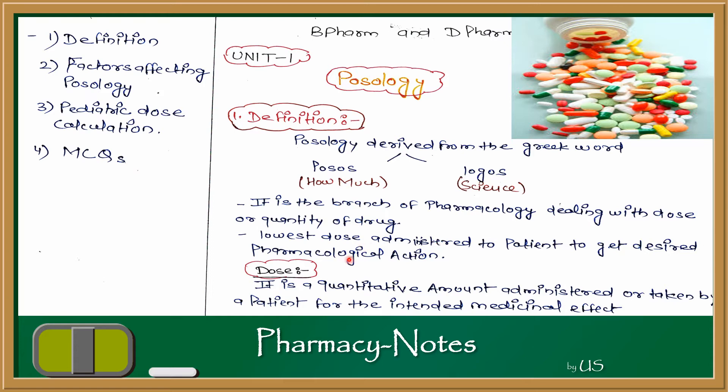Here we have two terms: one is 'dose' and one is 'dosage'. For dose — paracetamol is 500 mg, so 500 mg is the dose to get the desired pharmacological action. For dosage, it refers to how many times the patient takes the drug per day — for paracetamol, thrice a day or 2 times a day — this is dosage.